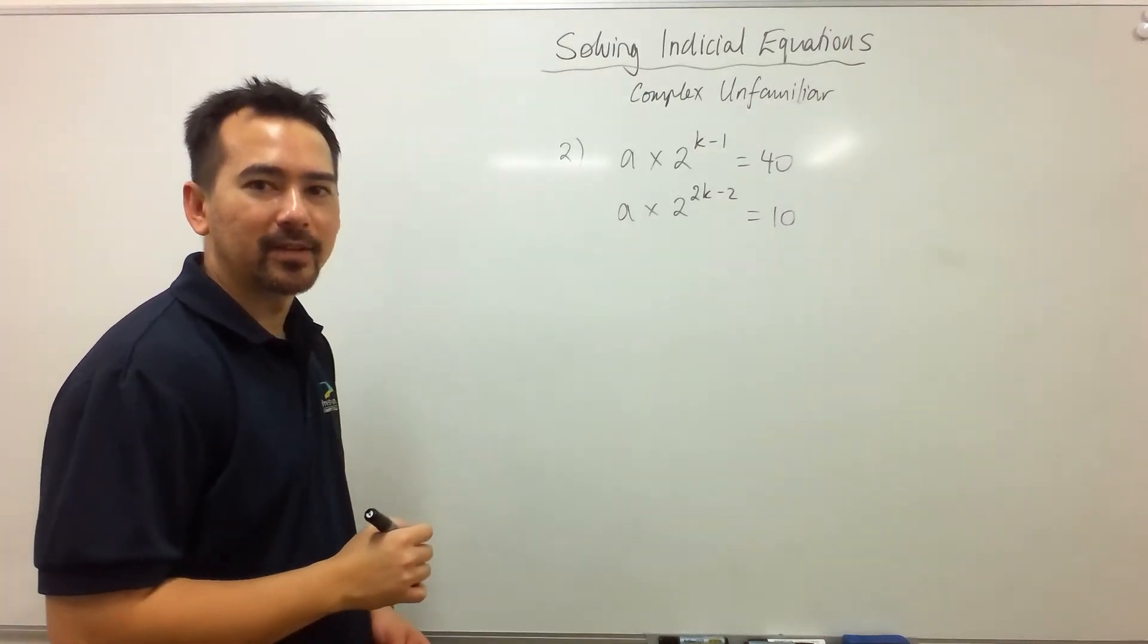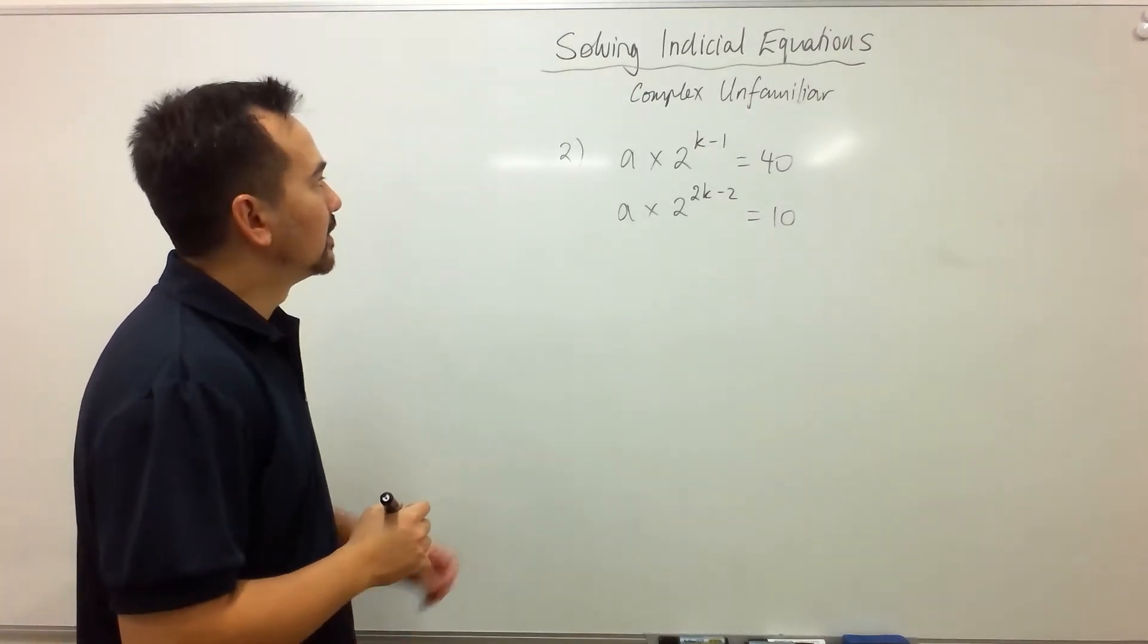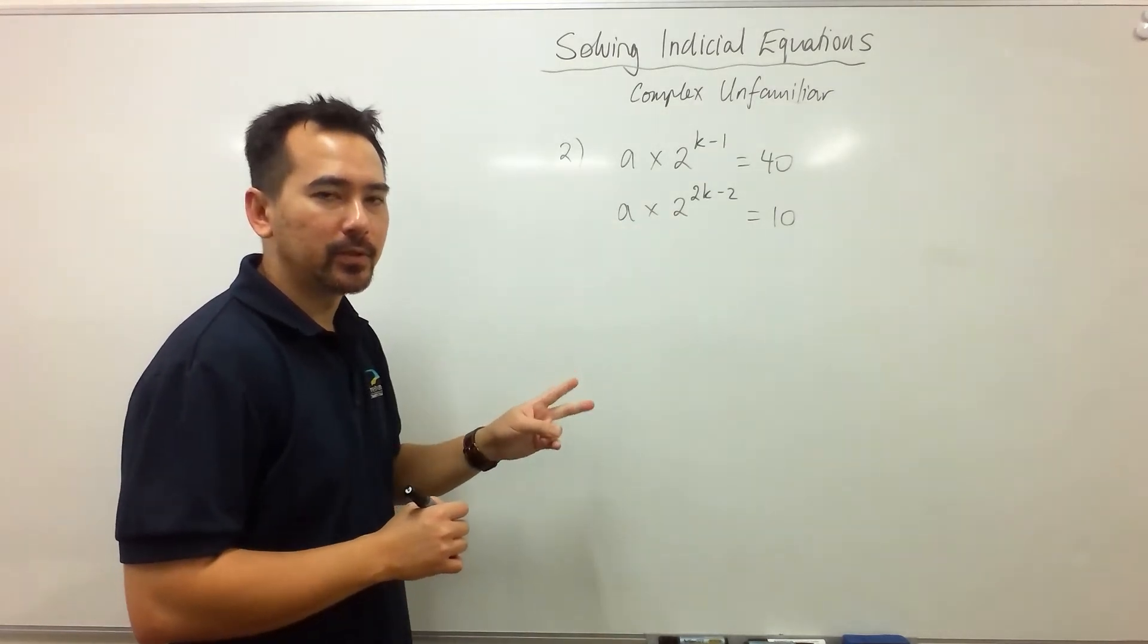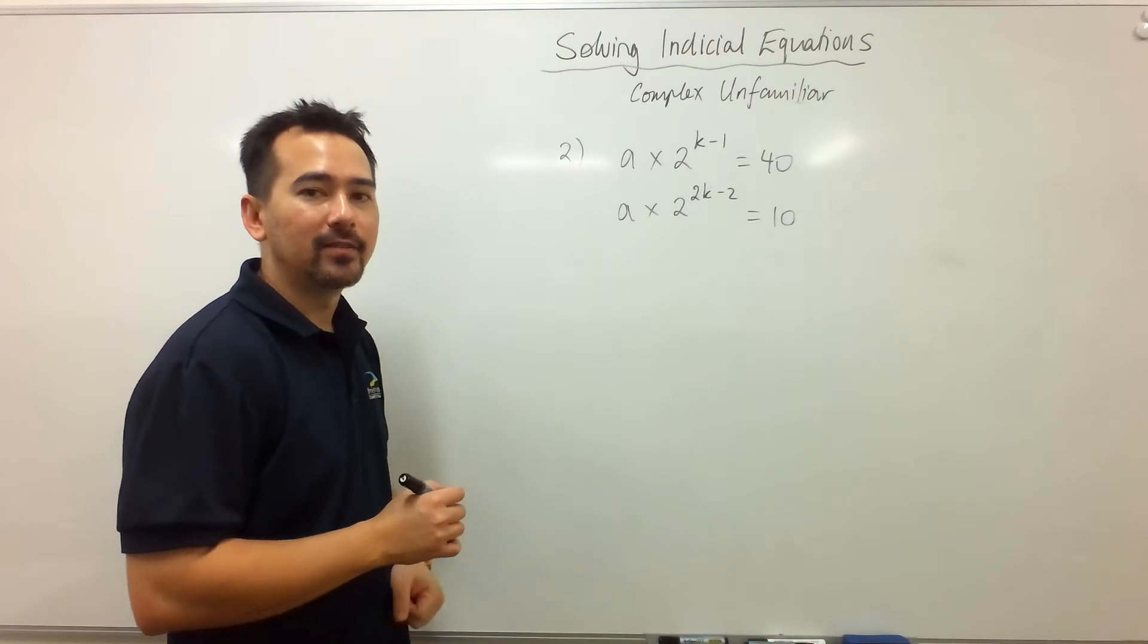Let's have a little go at another complex unfamiliar question. We're going to solve for a and k, and since there's two variables this is another scenario of simultaneous equations.